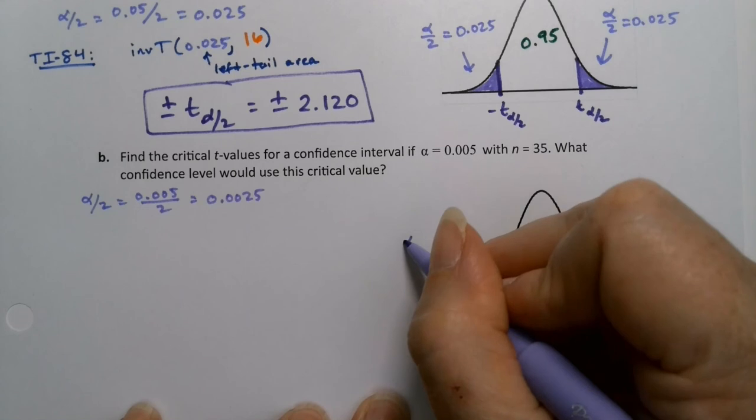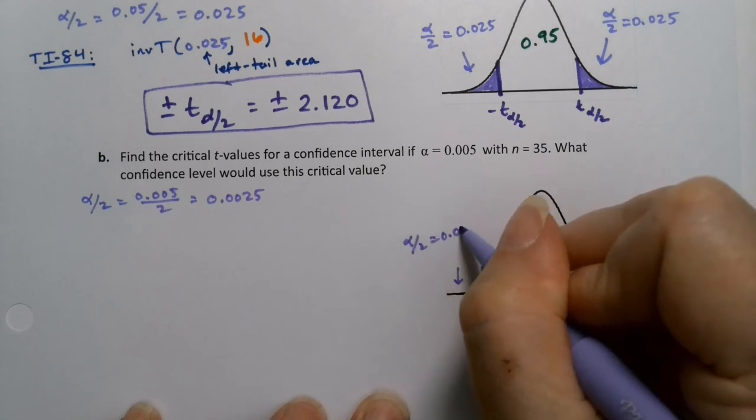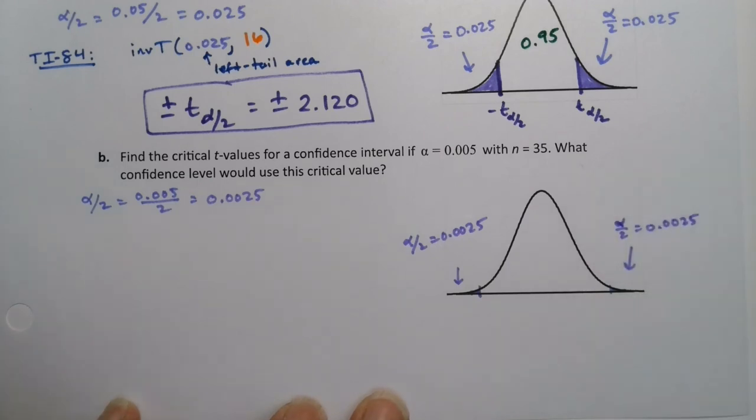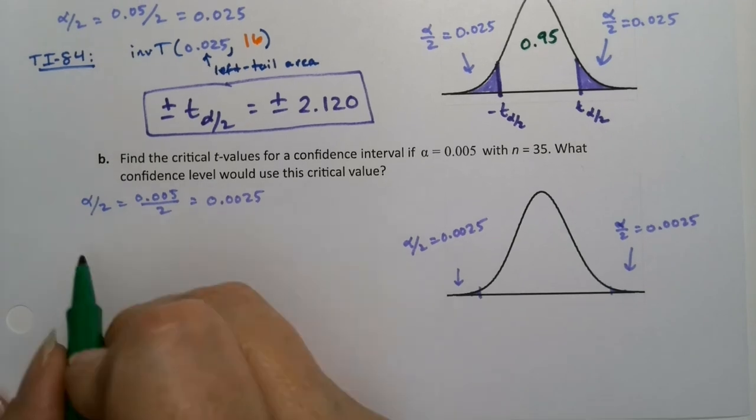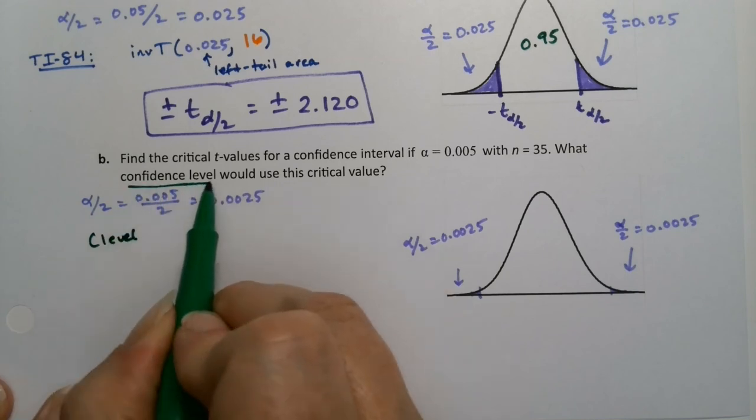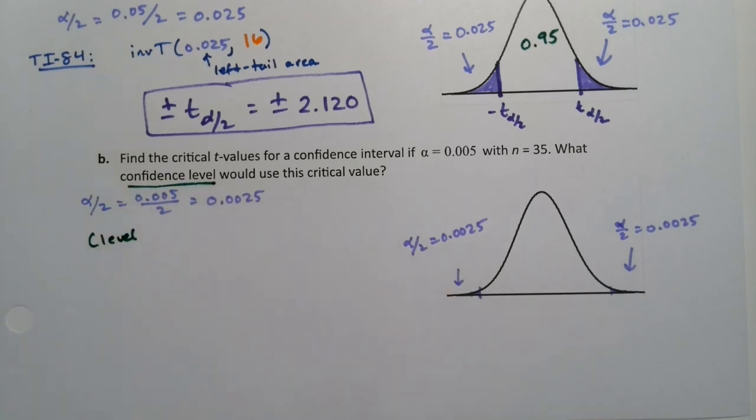So this little bit right here is alpha over 2, which is 0.0025. And so is this little bit over here. The center is my confidence level. So remember that your confidence level, which it asks you for, would be the complement of your critical value.